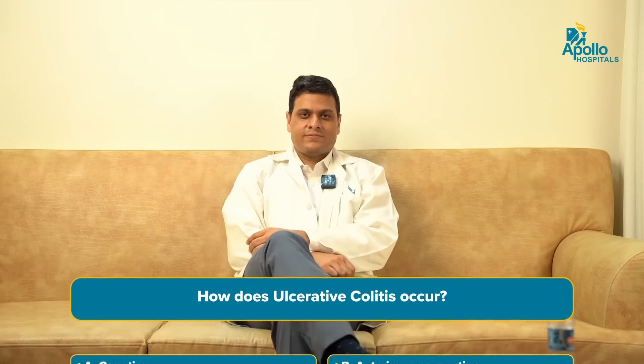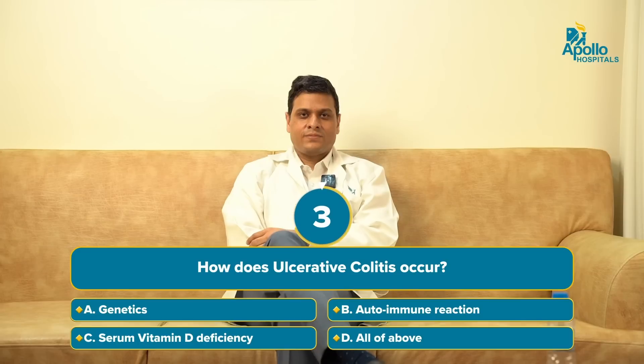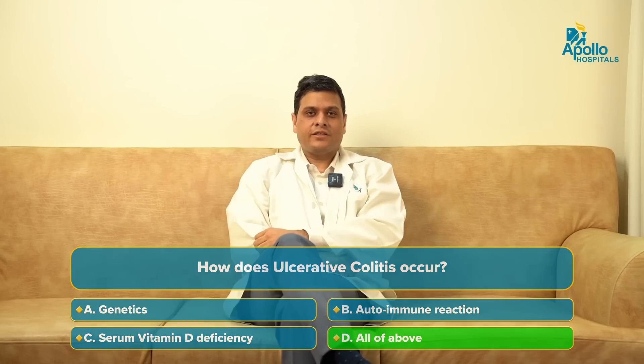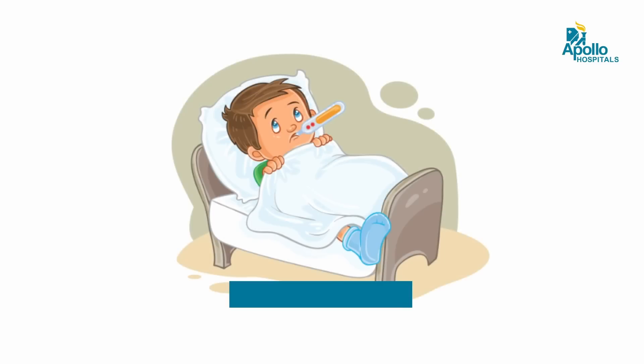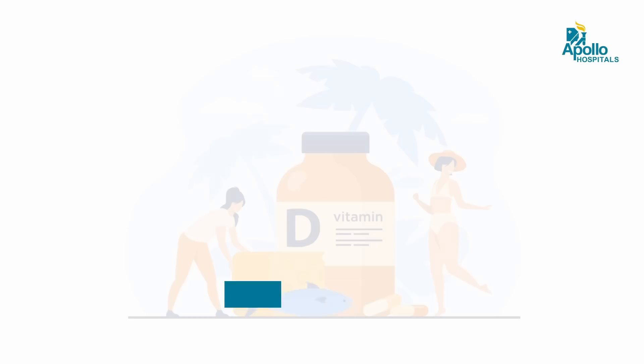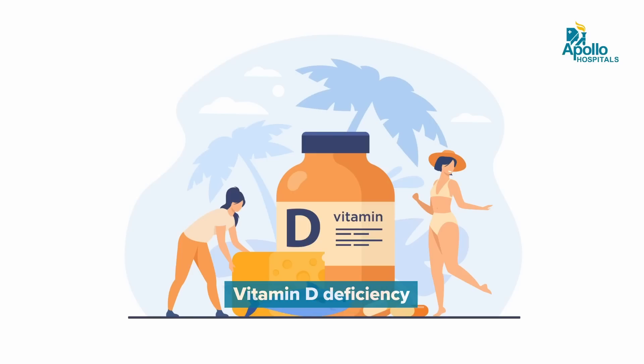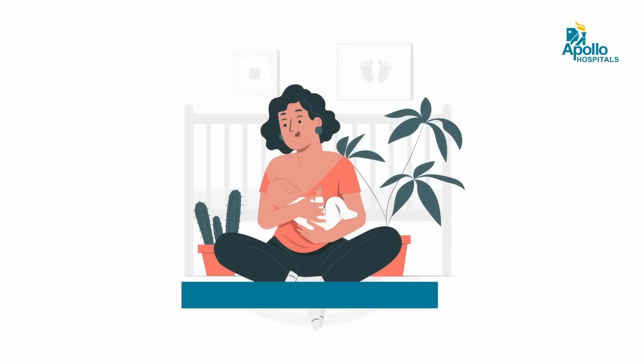How does it occur? Ulcerative colitis is a genetic or autoimmune disease, but certain environmental factors play a role — such as if a patient develops a childhood infection, serum vitamin D3 deficiency, or if patients lack breastfeeding, they are more predisposed to the development of ulcerative colitis.